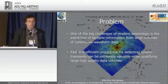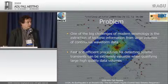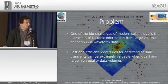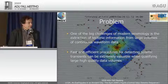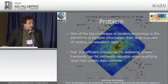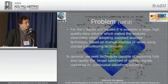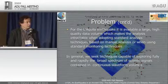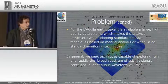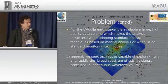The main problem we faced during the L'Aquila sequence — though it is common to most sequences — is that one of the big challenges of modern seismology is the extraction of tectonic information from large volumes of continuous waveform data. Fast and efficient procedures for detecting seismic transients can be extremely valuable when qualifying large, high-quality data volumes, which makes standard manual or monitoring analysis techniques intractable.